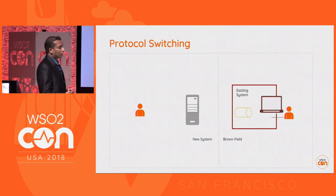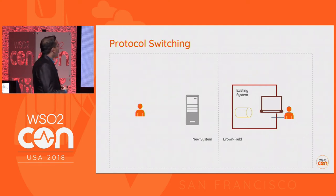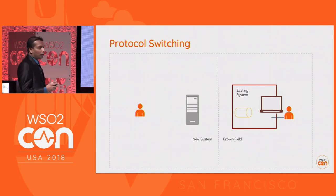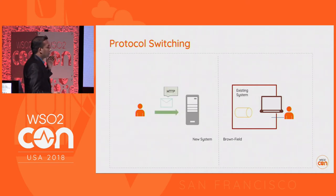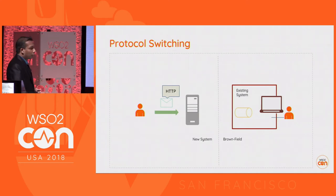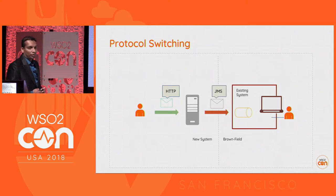Next we have protocol switching. In the brownfield we have an existing system which provides integration through the JMS protocol, but we need to expose it over HTTP. So we receive a message over HTTP and the integration solution should be capable of doing the protocol switching and delivering it over JMS.